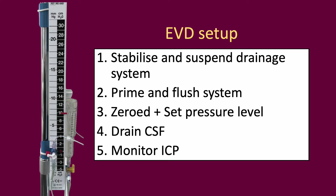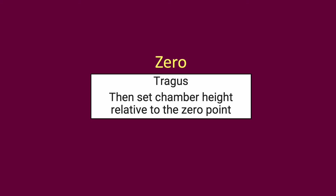The EVD should be suspended, primed, flushed, zeroed, and the pressure level set. Most systems do not allow simultaneous drainage and pressure assessment. Every time a patient moves, the EVD should be relevelled. If the patient is in the supine position with the head in the neutral position, the level of the EVD system should reflect the tragus of the ear. However, if the patient is on their lateral side, the level of the EVD should be the mid-sagittal line, i.e. between the eyebrows.